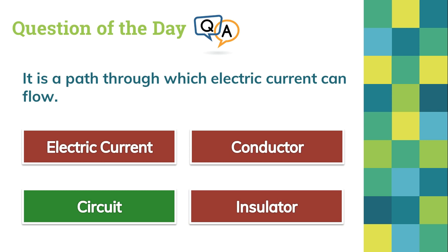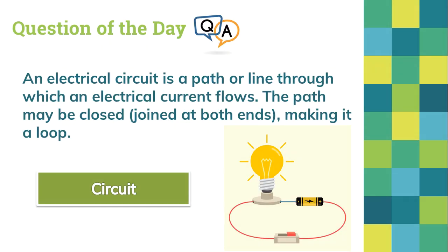If we take a look at the insulator, it's a material that slows or stops the flow of energy, such as electricity or sound. Now let's take a deeper look at circuit, which is the right answer. A circuit is an electrical path or line through which an electrical current flows.